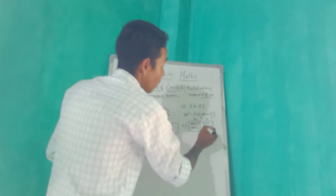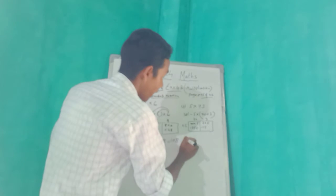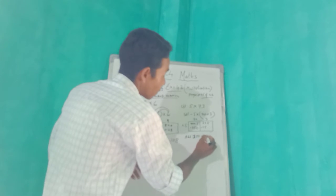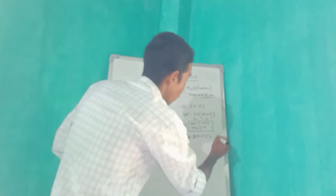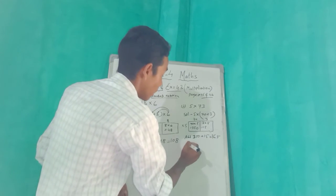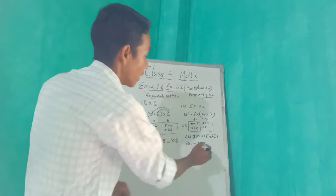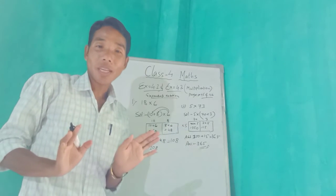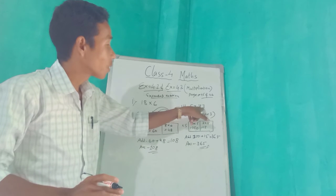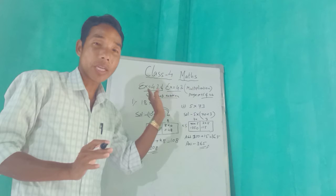Then 3 into 5 equals 15. So we add: 350 plus 15 equals 365. Our answer is 365. It is very easy — you just have to break the number like this. This is called expanded notation of multiplication.